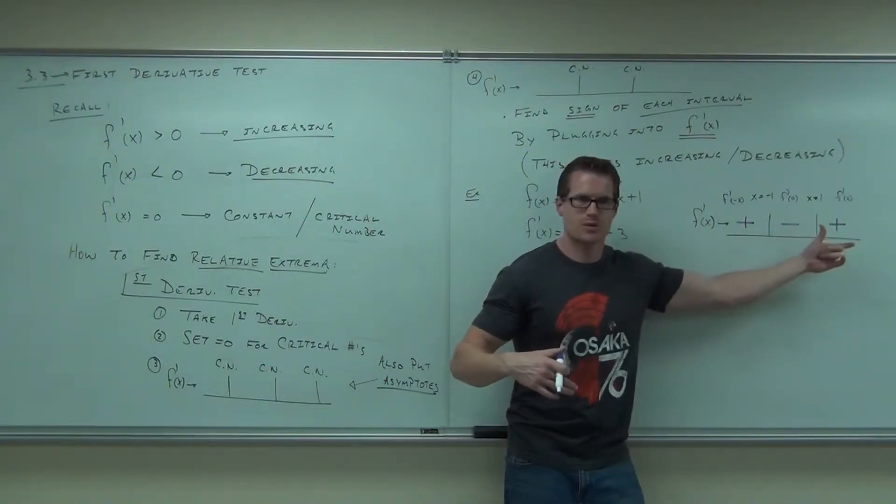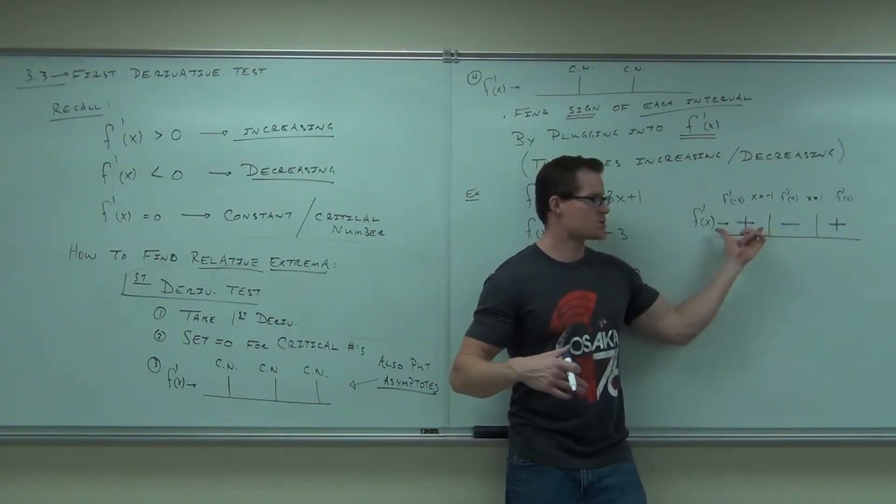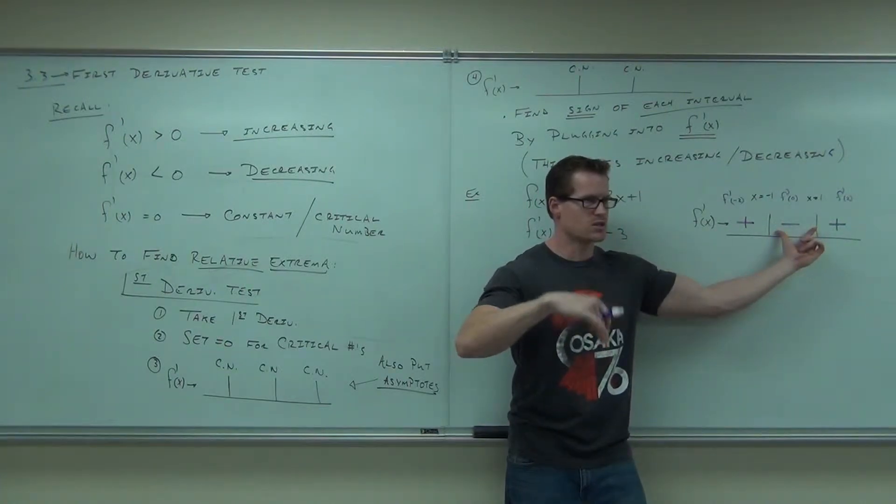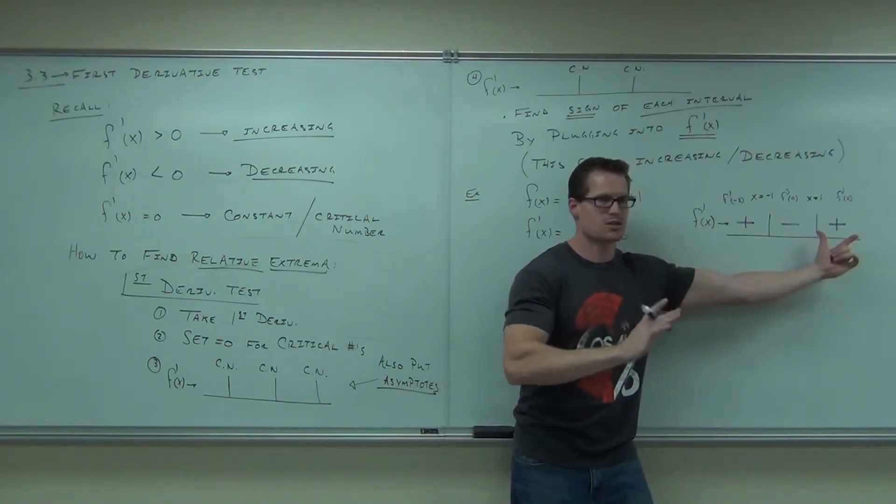So it's going to be consistent for those intervals. This says my slope is positive, that means my function is increasing. My slope is negative, that means my function is decreasing. My slope is positive, that means my function is increasing again.